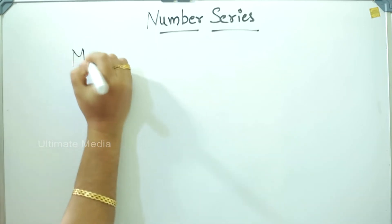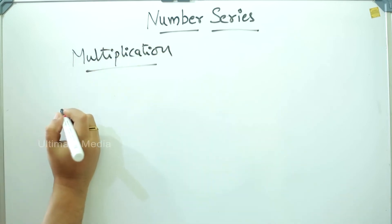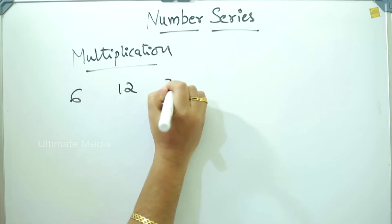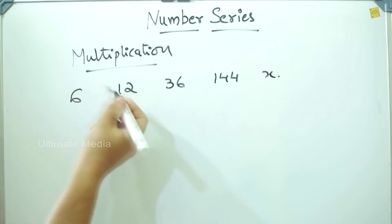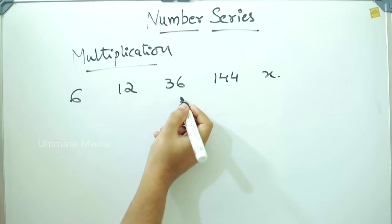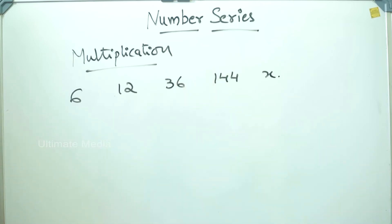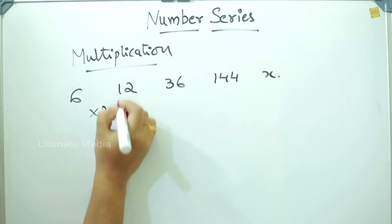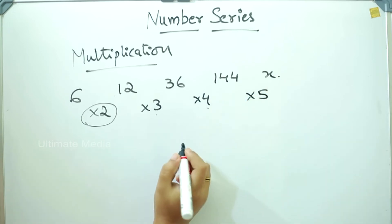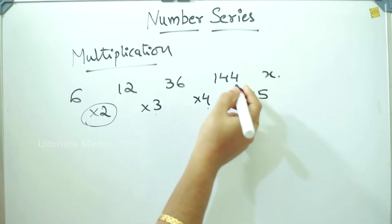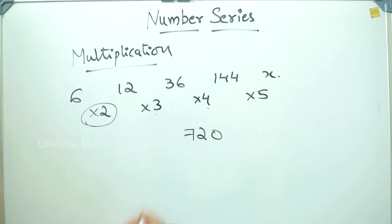This is multiplication. Multiplication question: 6, 12, 36, 144, x. If I have a form, that means we can have a little multiplication logic. This 6 times 2 is 12. This 12 times 3 is 36. 36 times 4 is 144. Then 2, 3, 4, 5 — so 144 times 5 is the answer: 720.